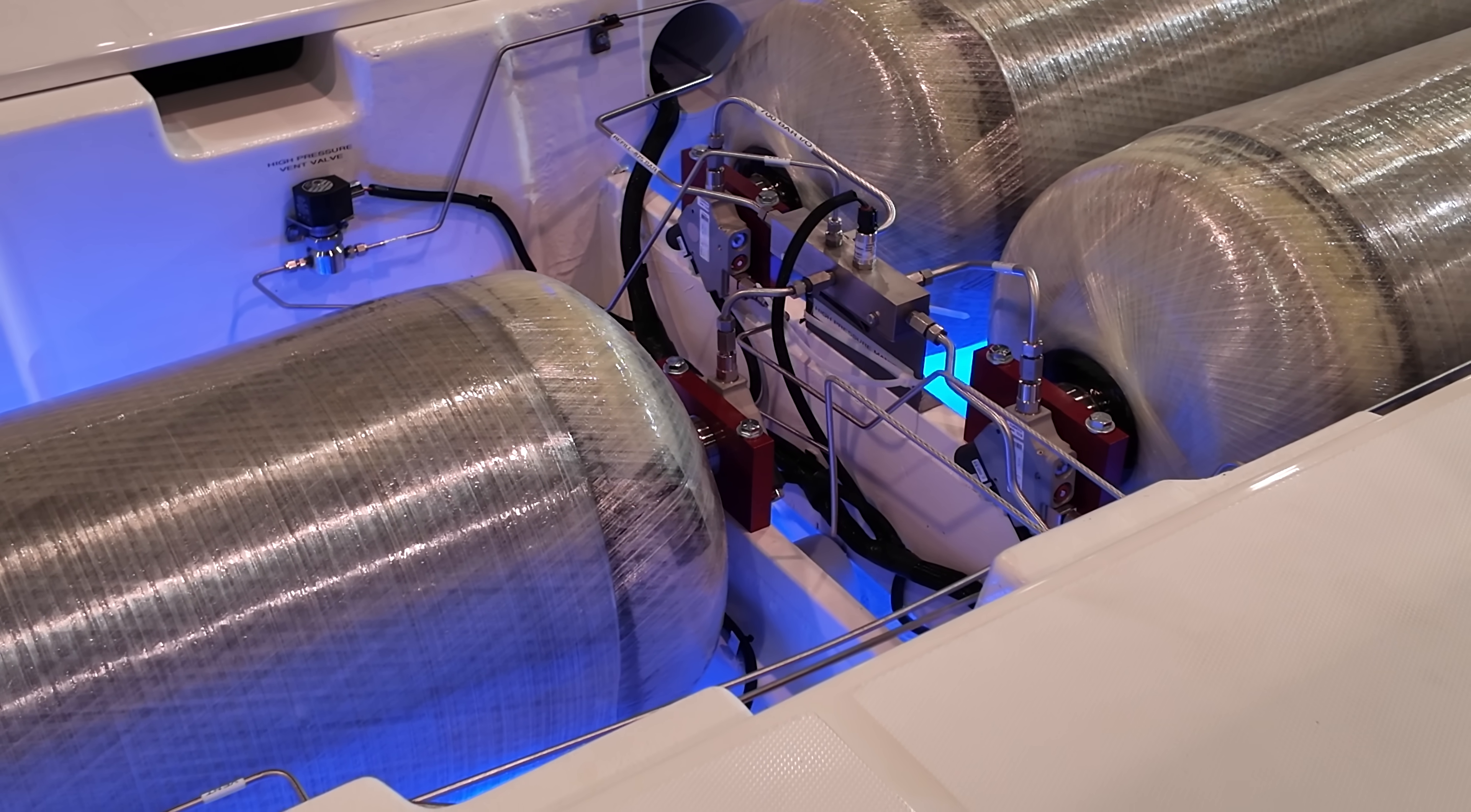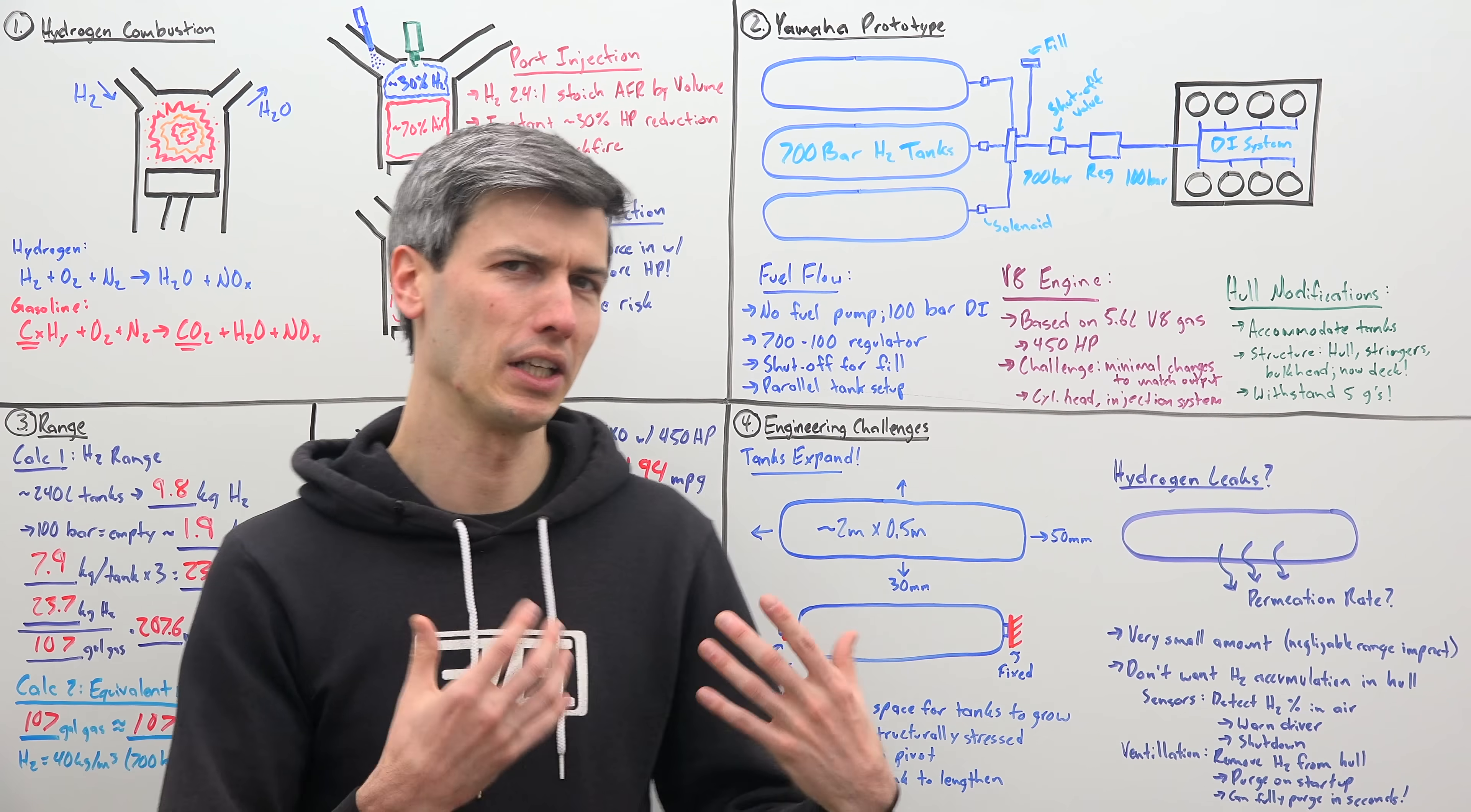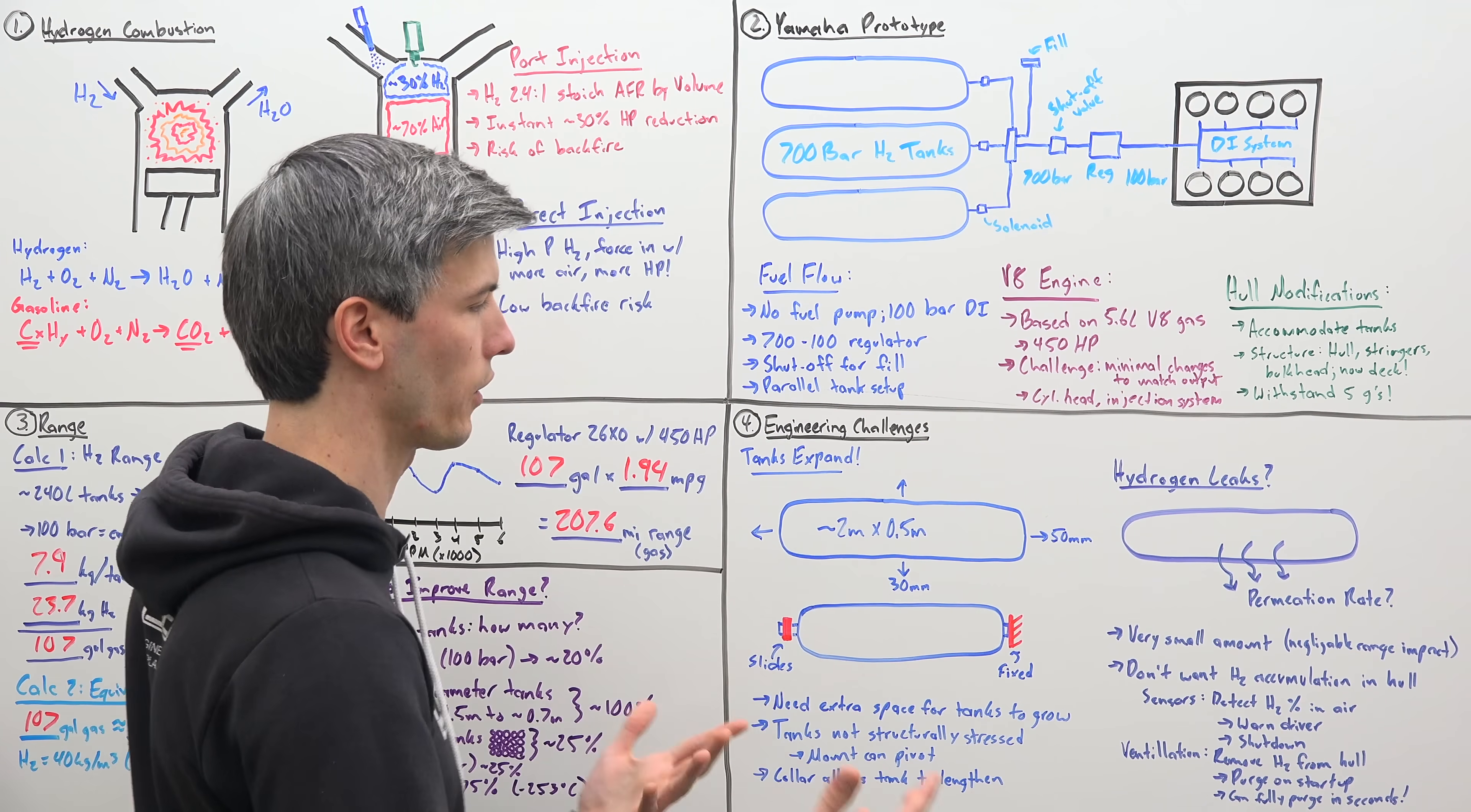Another really interesting challenge is that hydrogen is a very small molecule and it doesn't like being stored. So these hydrogen tanks have permeation standards that they have to meet, ensuring a minimal amount of hydrogen escapes. But the fact remains that some hydrogen will escape. Now, these permeation rates are really low. So from a range standpoint, it's really not something you need to think about. But you don't want hydrogen accumulating within the hull of the boat. Hydrogen, of course, is flammable. So as you have this hydrogen permeate out of these tanks, you want to make sure that you have proper ventilation to get rid of that and let it escape.